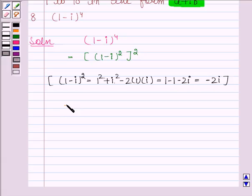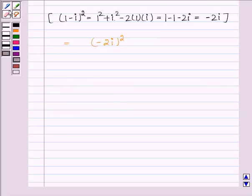So this expression is equal to square of minus 2 is 4 and square of iota is iota square. We know that iota square is equal to minus 1. So we have minus 4.